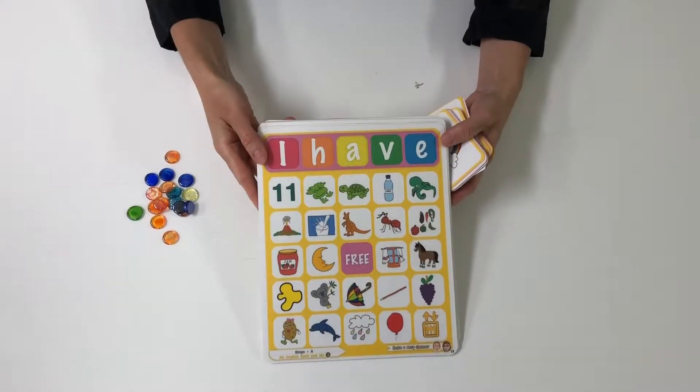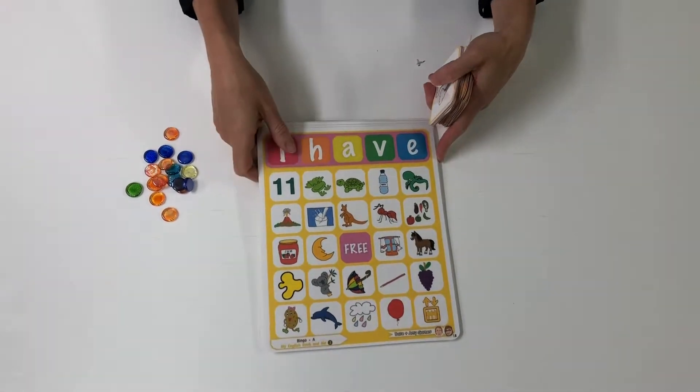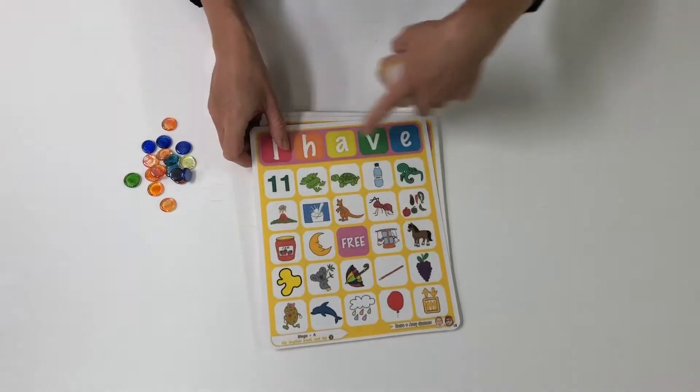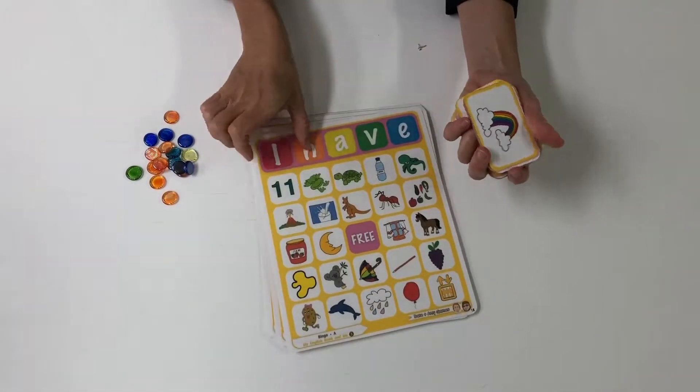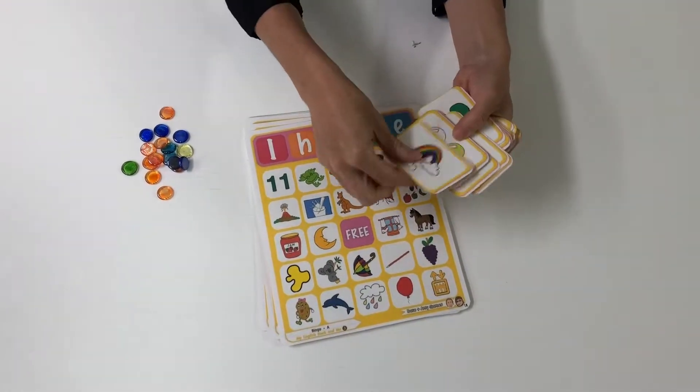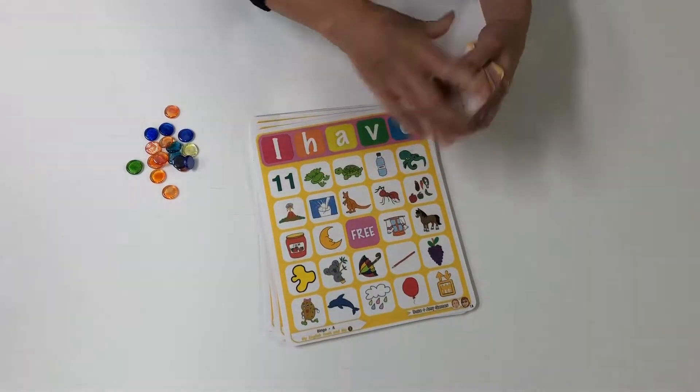Bingo ABC phonics. Double-sided boards: pictures on one side, letters on the other. 47 calling cards with pictures and letters. Easy to play.